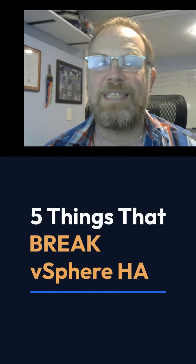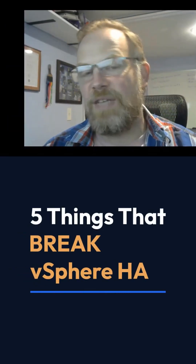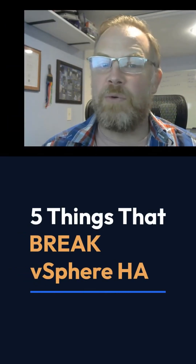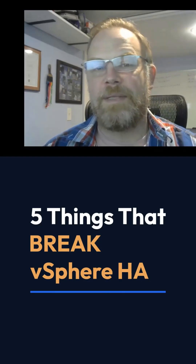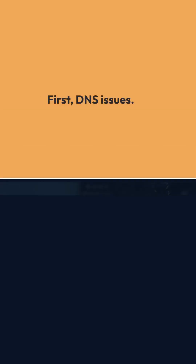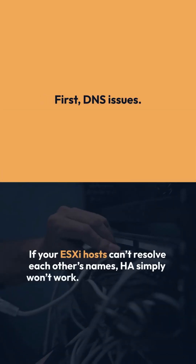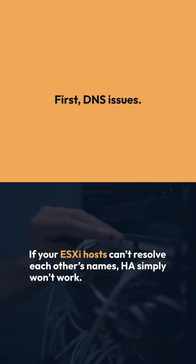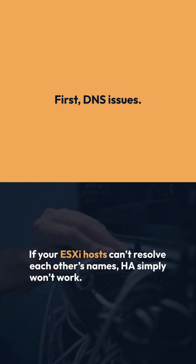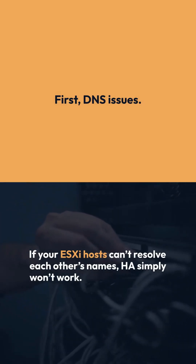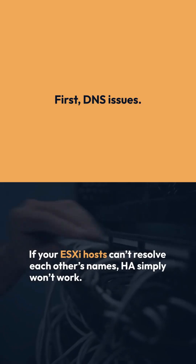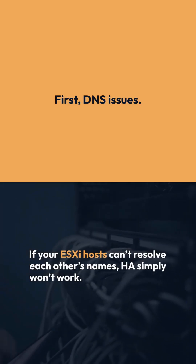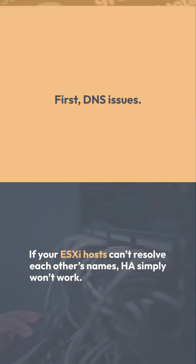Here are the top five things that break vSphere High Availability and how to avoid them. Number one: DNS issues. If ESXi hosts can't resolve each other, then High Availability cannot function. So we always want to test DNS, and always test forward and reverse lookups.